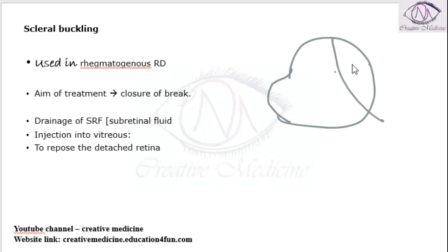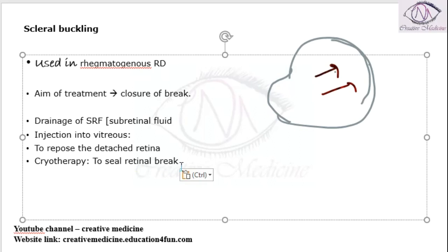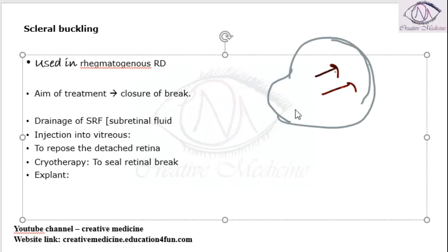After removing the fluid, you push the retina and make it oppose the normal side. You then repose the detached retina, and the break can be sealed using cryotherapy.